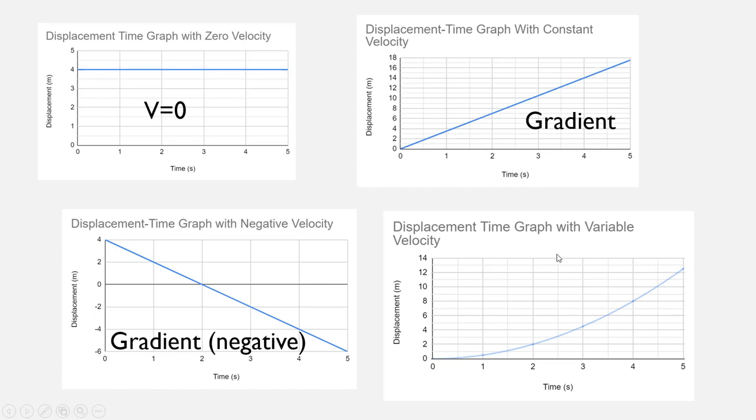Our last case is the hardest one to deal with, which is where we have a variable velocity. So the velocity at one second and the velocity at two seconds is going to be different. So in this case, we've got an acceleration.